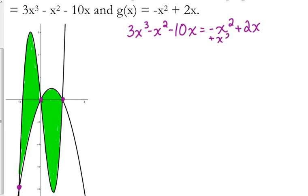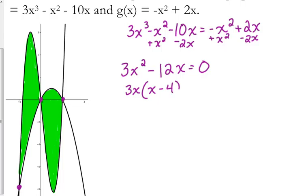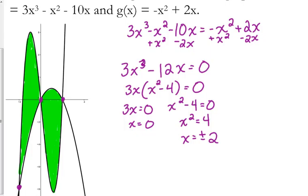We've got 3x cubed. The x squares cancel. Minus 12x is equal to zero. Yes, it's still a cubic function. But, factor out a 3x. It's a GCF. Take out the 3x. We've got x squared minus 4. So, we get x equals 0 from the 3x is equal to 0.